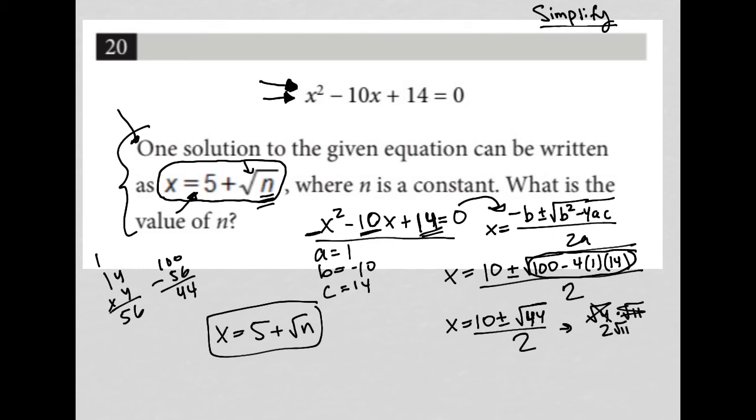I would then therefore have x equals 10 plus or minus 2 root 11 all over 2. But since I'm dividing by 2, I can simplify here, making that 10 a 5, and here making that 2 a 1, and here making that 2 a 1. Divided everything by 2 and therefore lead to having x equals 5 plus or minus the square root of 11.